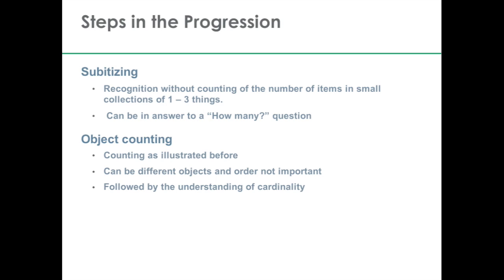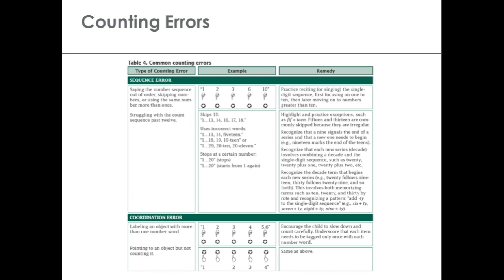The next step in the progression is being able to count collections of objects larger than three things, actually using the counting words to find out how many things are there. As I said, there's a lot that goes into this knowledge, but when the child is beginning to count they can count different objects, count a set in different orders — from left to right, right to left — and come up with the same number, so they are developing skills that allow them to count correctly and finally to understand cardinality.